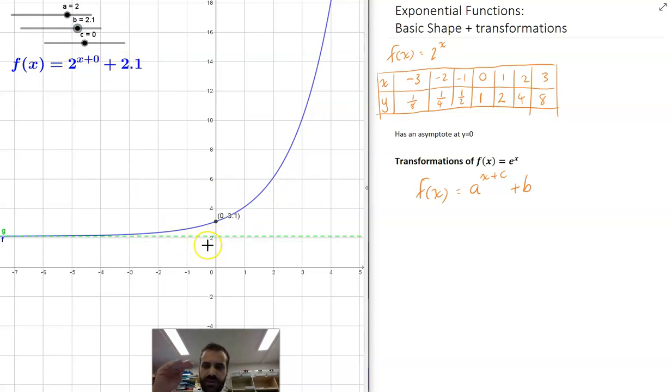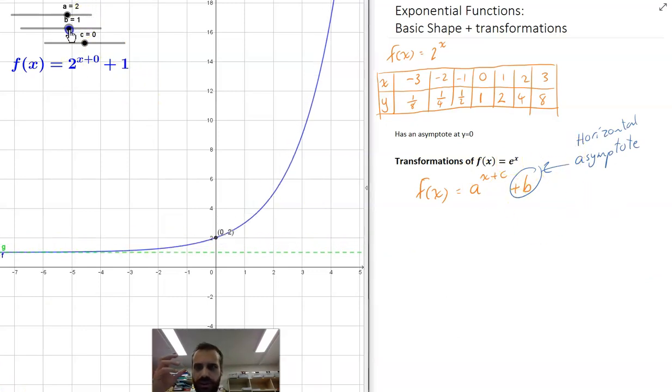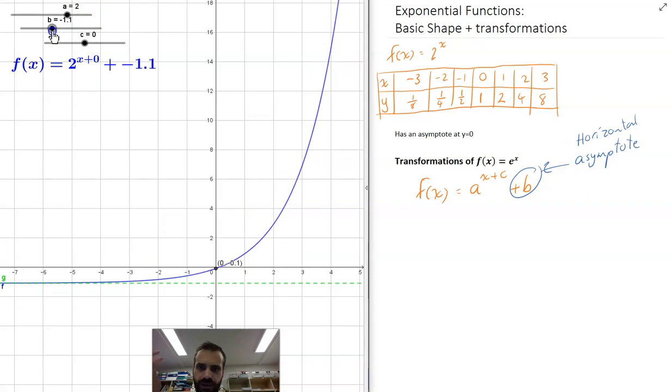You can see here's my new function 2.1. Now that b value is also going to be my asymptote, because my asymptote when there was no b value, or when the b value was zero, is zero. Now that it's moved up by 2.1, the asymptote is 2.1. Obviously I've moved that up and that's become my horizontal asymptote. But I could also move that down with a negative b value as well.